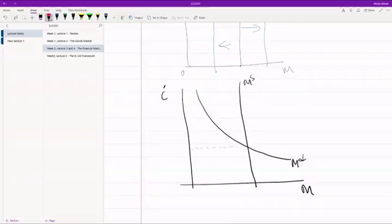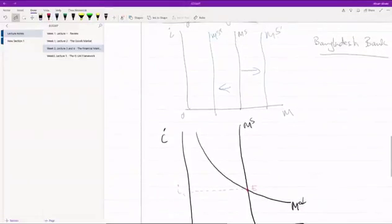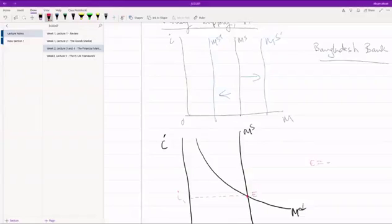We basically see that at this interest rate, this is the money demand, and this is our equilibrium. Let me just try to start. E is the equilibrium.